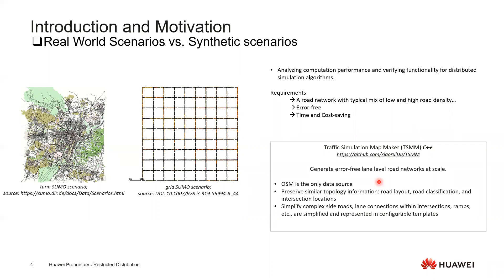On the other side, we also simplify and delete many complex information, for instance, like the real lane connections or the ramps, etc. In the end, we can get a road network of any arbitrary size which can reflect the similar traffic patterns and can be used for our benchmarking or test work.